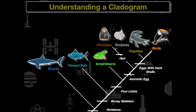These lines indicate the rise of some morphological change in the organism. Every organism beyond the four-limbs line — moving up the cladogram — is going to have four limbs: amphibians, primates, rodents, reptiles, and birds. Sharks and finned fishes do not have four limbs.